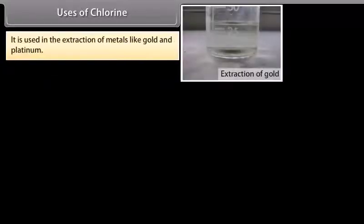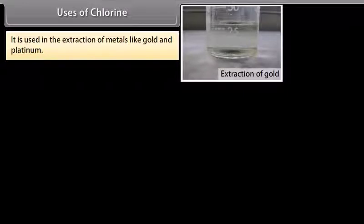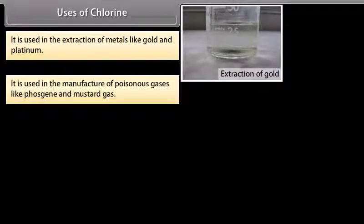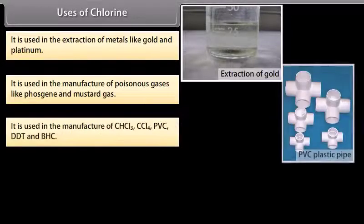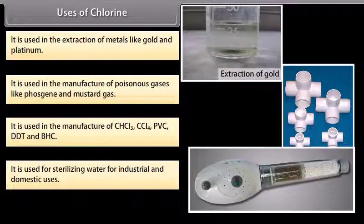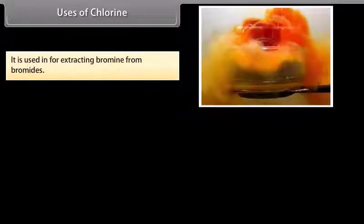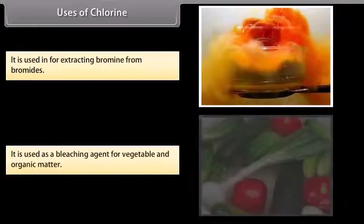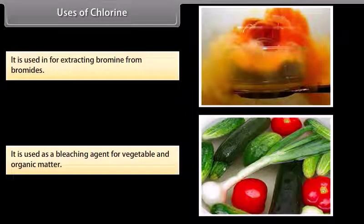Uses of chlorine: It is used in the extraction of metals like gold and platinum. It is used in the manufacture of poisonous gases like phosgene and mustard gas. It is used in the manufacture of CHCl3, CCl4, PVC, DDT and BHC. It is used for sterilizing water for industrial and domestic uses. It is used for extracting bromine from bromides, and as a bleaching agent for vegetable and organic matter.